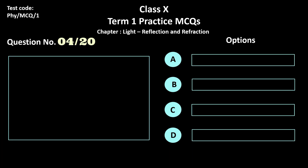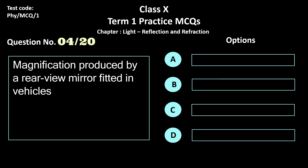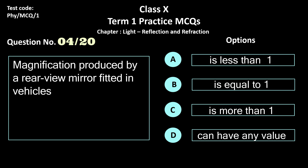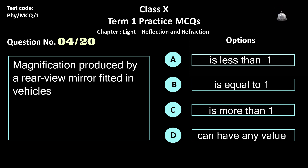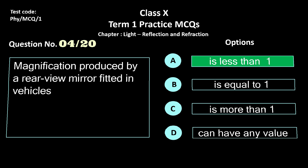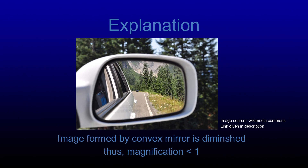Question 4. Magnification produced by a rear view mirror fitted in a vehicle is — options: a) less than 1, b) equal to 1, c) more than 1, and d) can have any value. The correct answer is option a, less than 1. Rear view mirrors are convex mirrors which form a diminished image, thus magnification is less than 1.